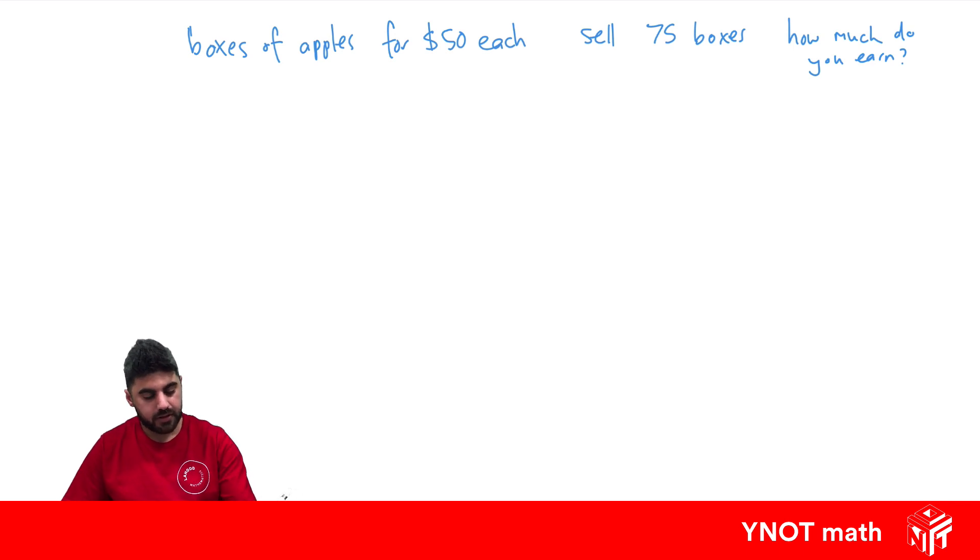To calculate our earnings here, if we're selling 75 boxes at $50 each, we just have to multiply 75 and 50, and that's going to give us $3,750. Let's look at another example.